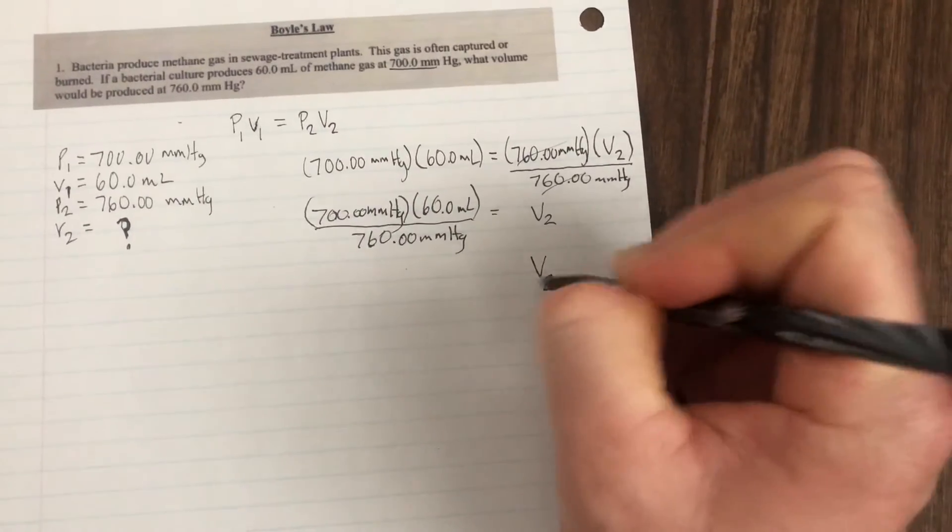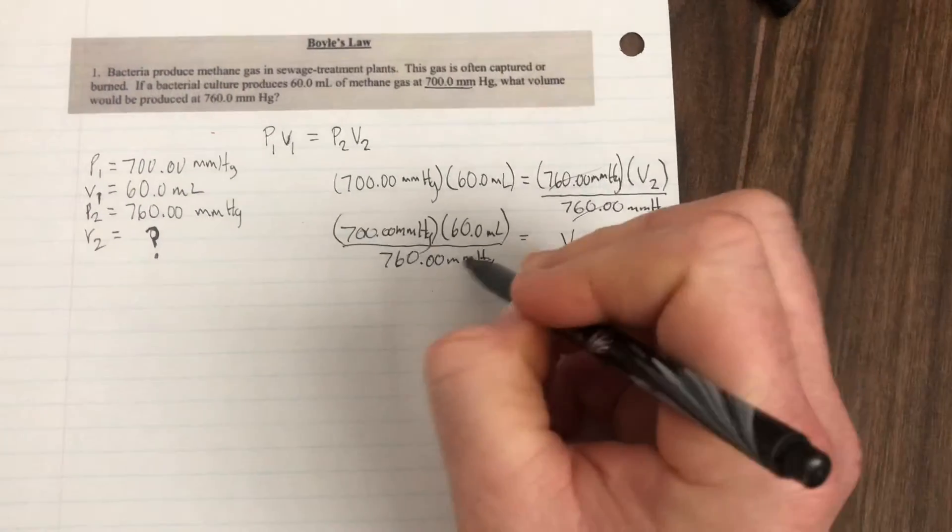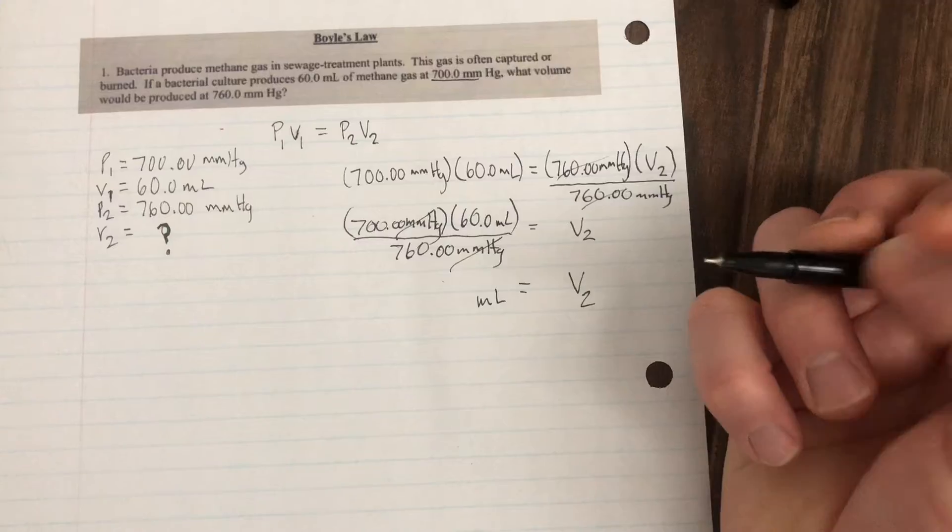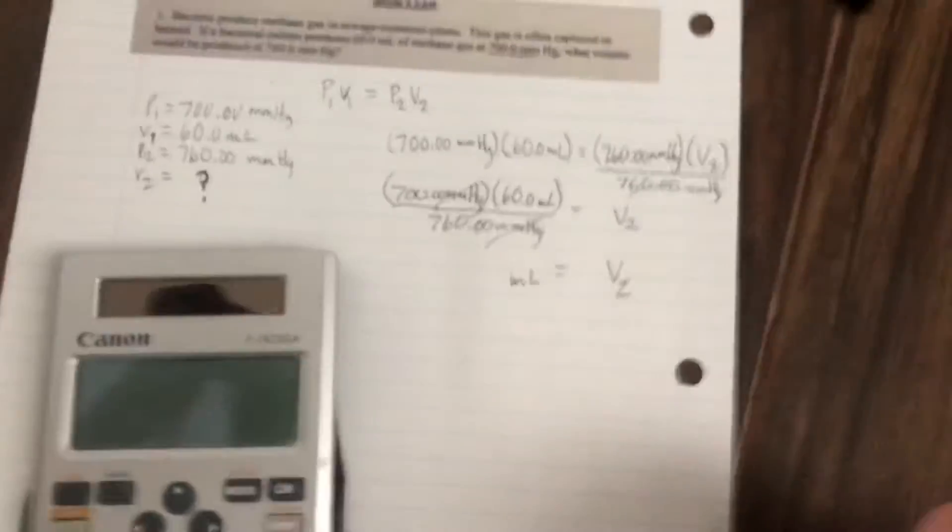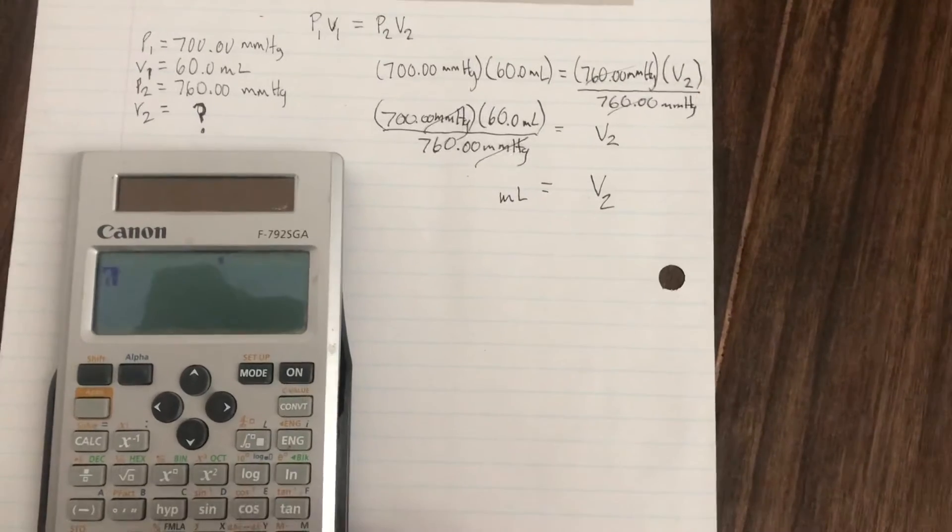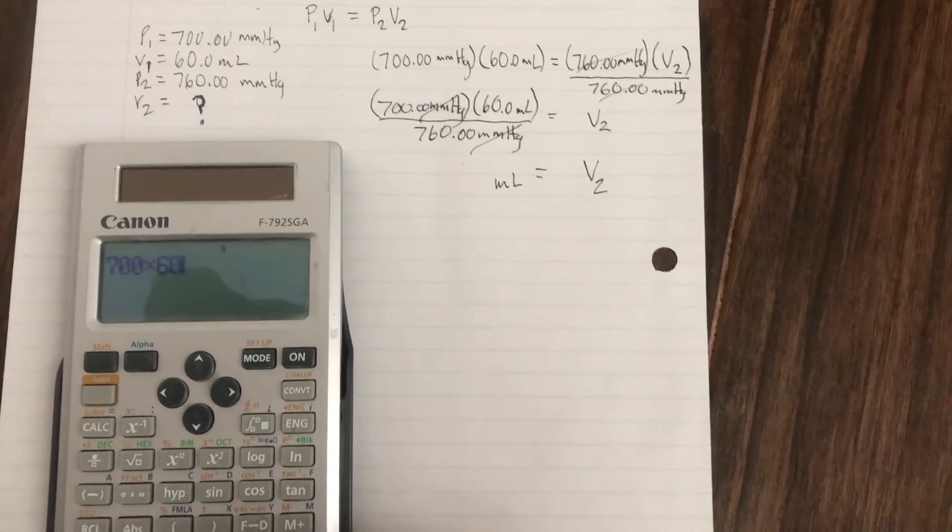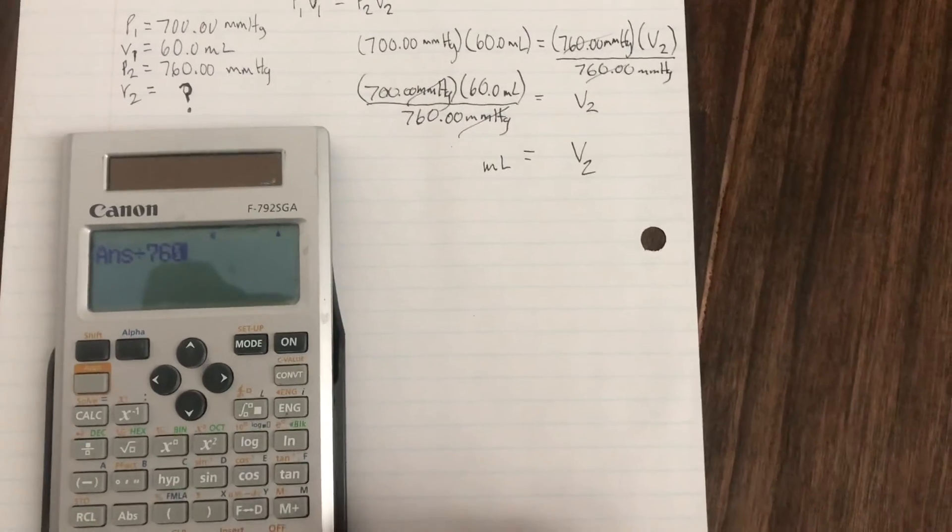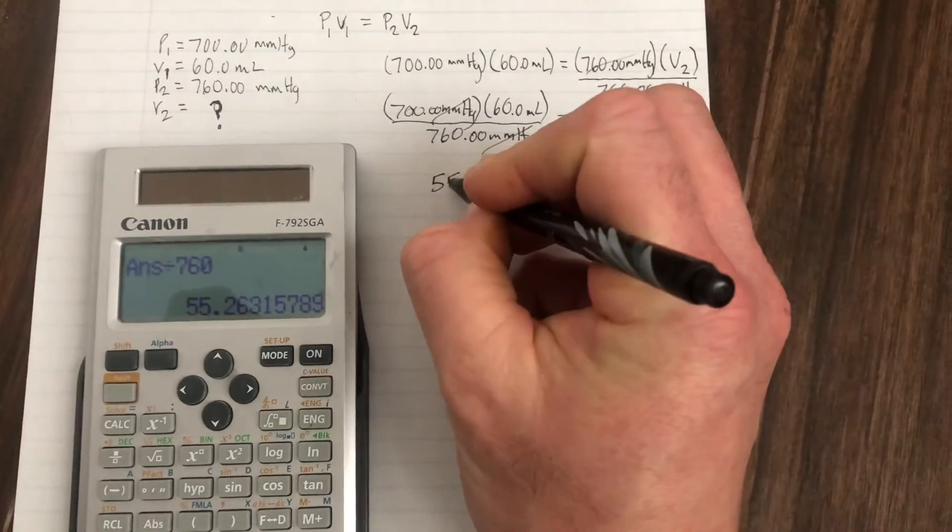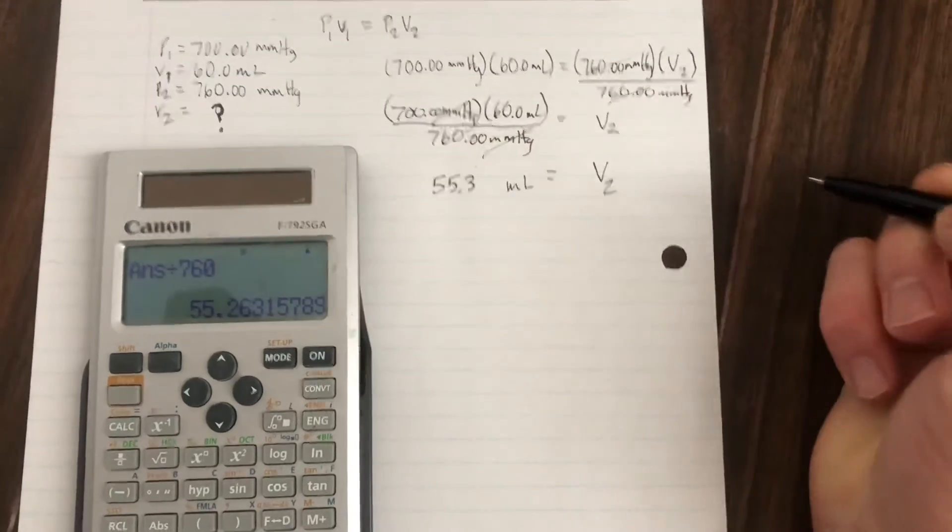If we're tracking units, you'll notice that the millimeters of mercury cancel out and we're left with just milliliters. So I grab our calculator here. I'll go 700 times 60 and then divide that by 760. And we get 55.3 milliliters.